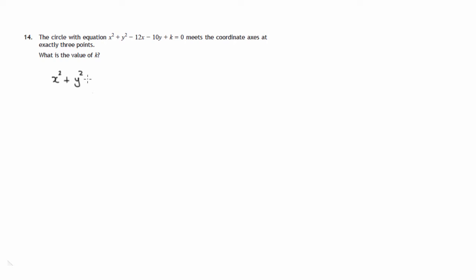So x squared plus y squared minus 12x minus 10y plus k equals 0. Now there's a very easy practical method of finding the centre and finding the radius. Provided your circle equation has 1x squared plus 1y squared, then you can use this method.